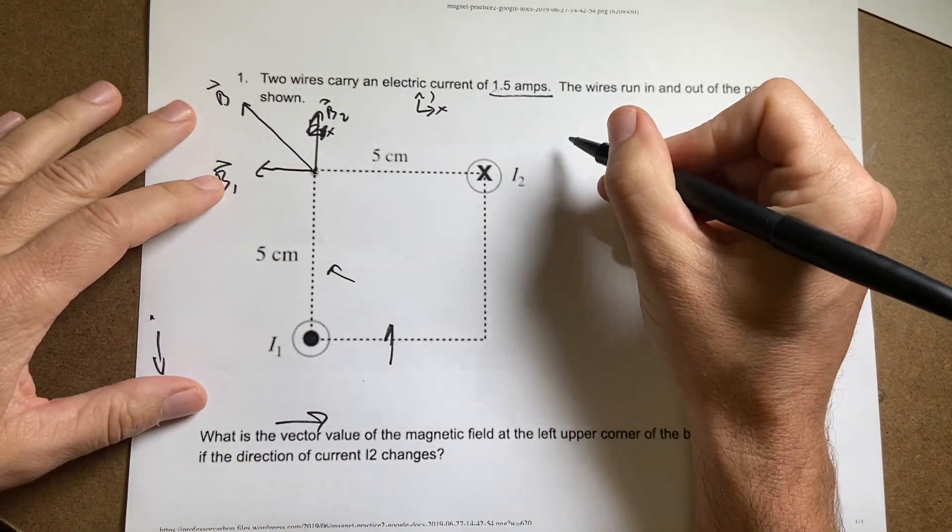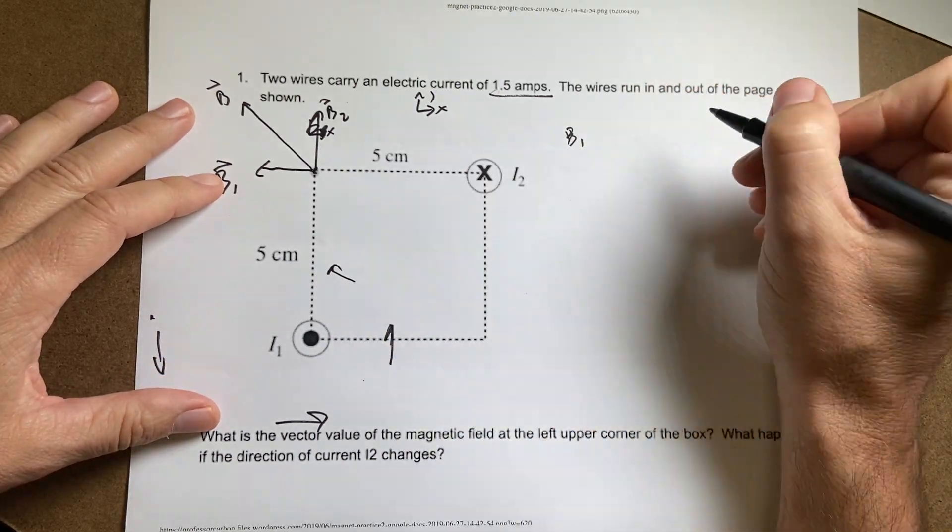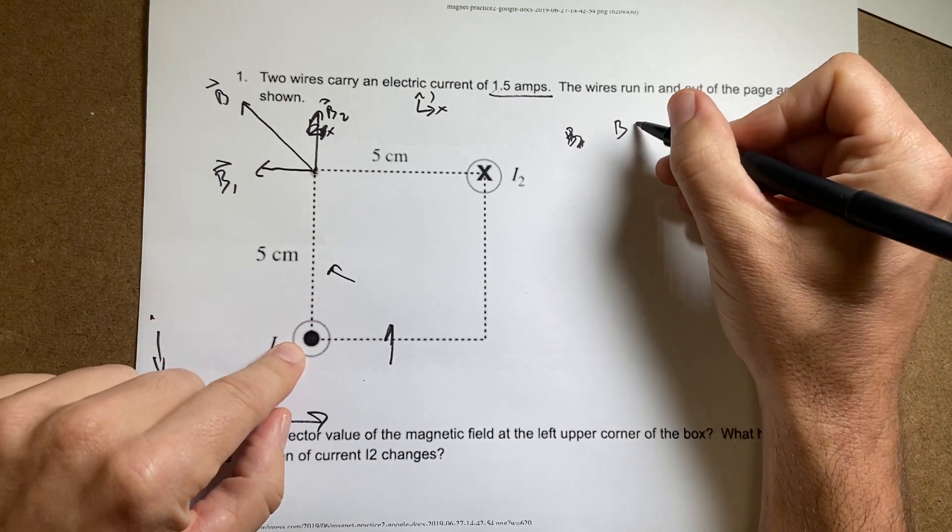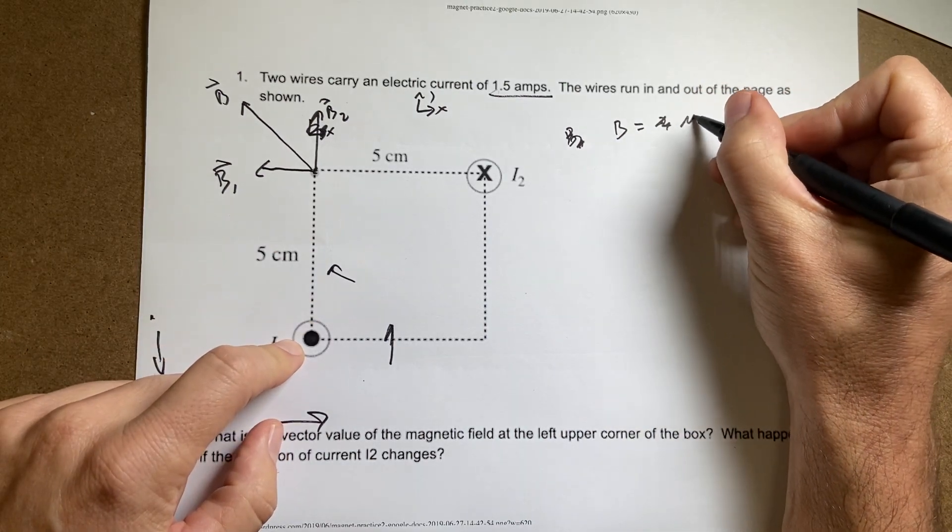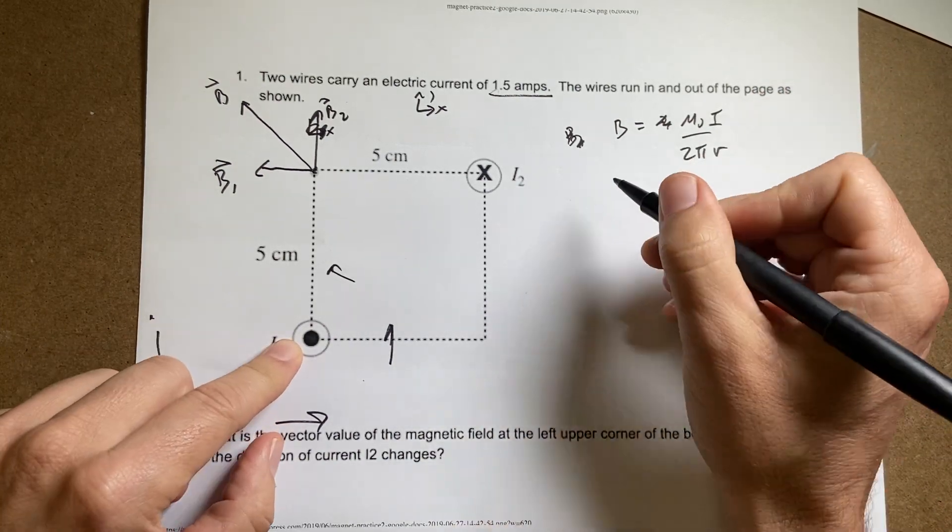So let's find B1. B1, let's say, I'm even writing on this paper. If I know, if I have a current carrying wire, the magnitude of that magnetic field is going to be mu naught times i over 2 pi r. So in this case, I want that as a vector.